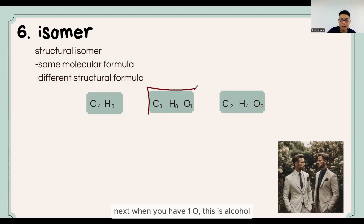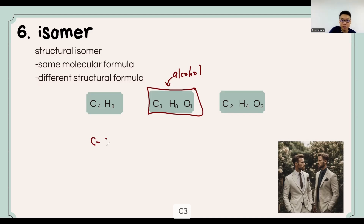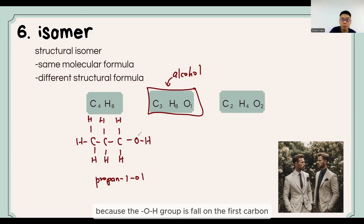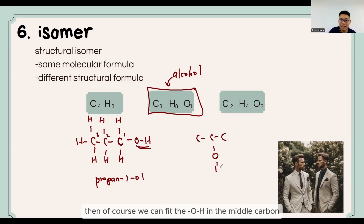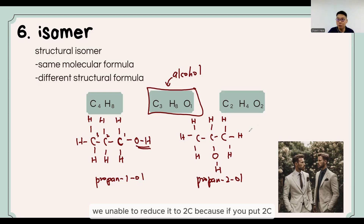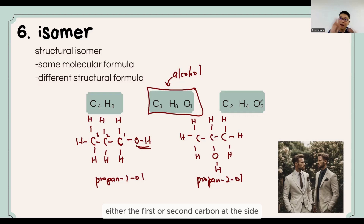Next, when you have one oxygen — this is alcohol. For C3 alcohol, we first put the OH group at the side, giving propan-1-ol because the OH group is on the first carbon. Then we can fit the OH on the middle carbon, giving propan-2-ol. Since it is a 3-carbon chain, we are unable to reduce it to 2 carbons, because placing 2 carbons would put the OH on either the first or second carbon at the side, making no difference.